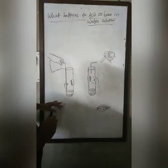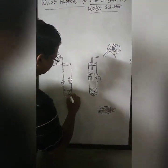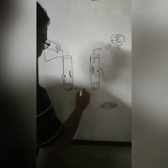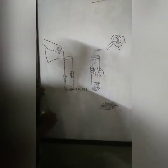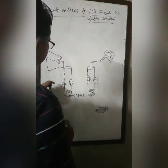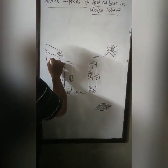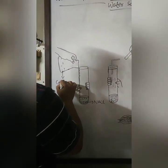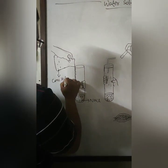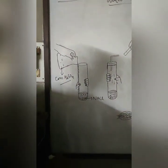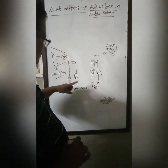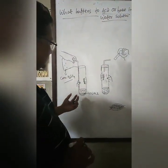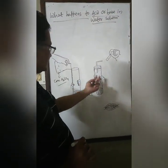Here is a simple activity in which we have taken sodium chloride in a test tube. Sodium chloride has been taken and into this test tube or conical flask, concentrated sulfuric acid has been added. You will find that some gas started coming out.